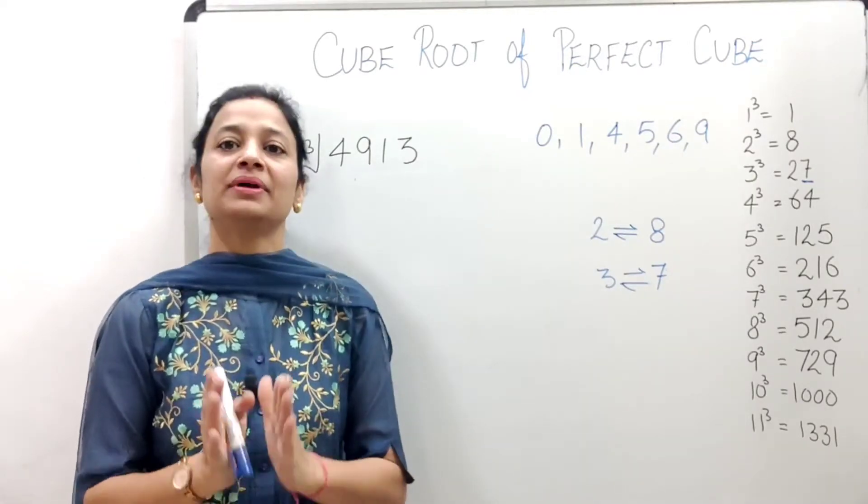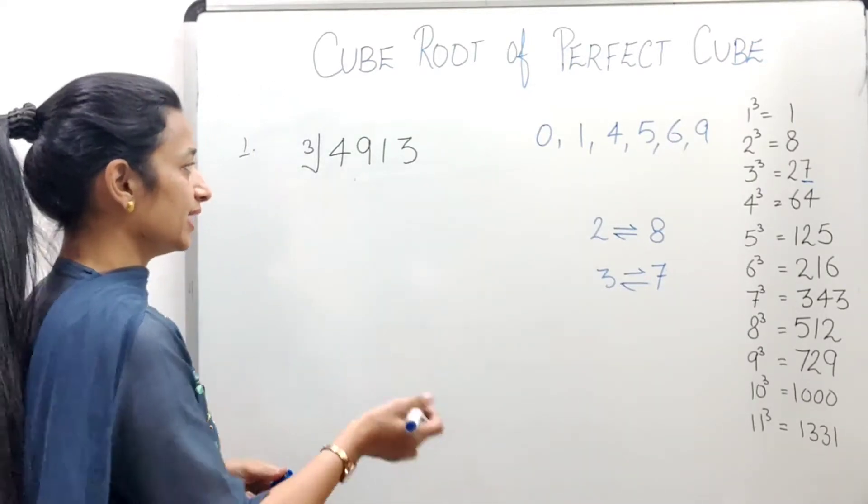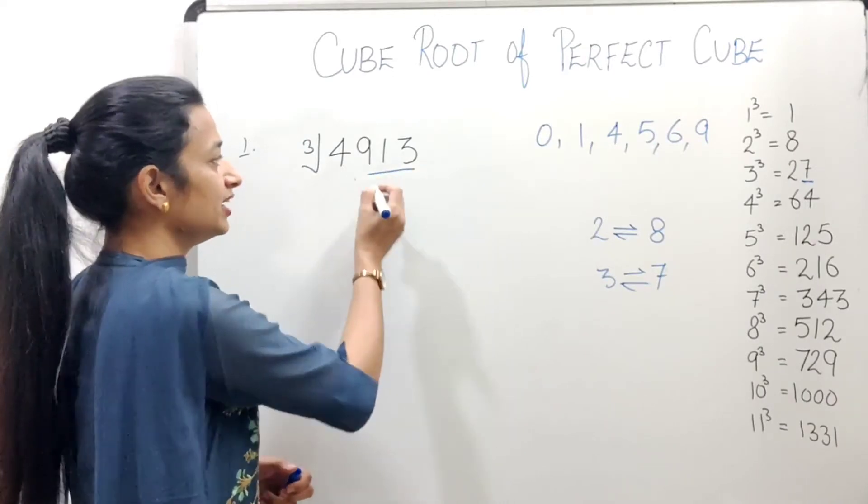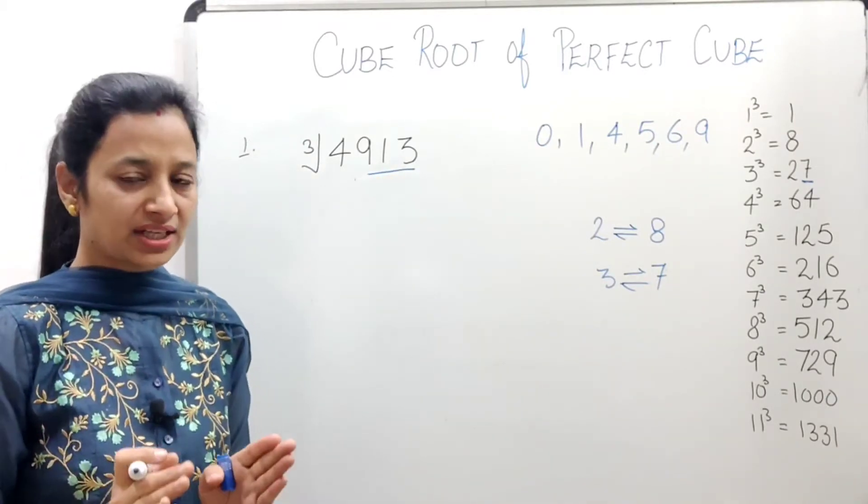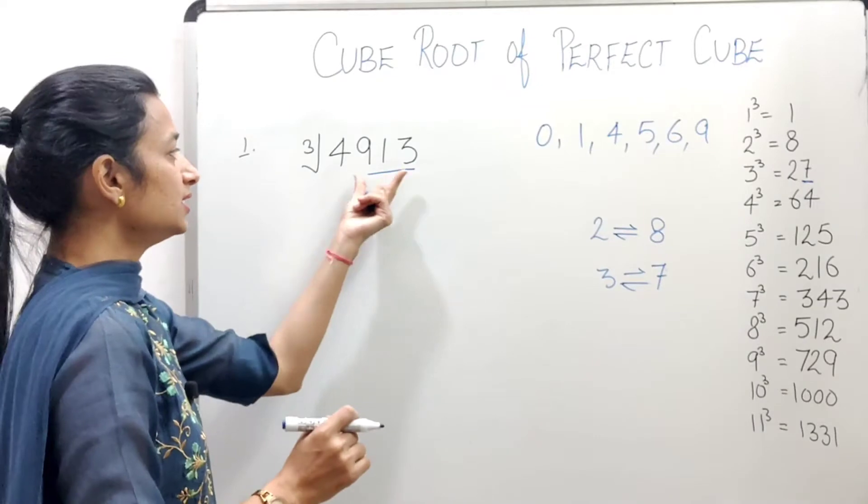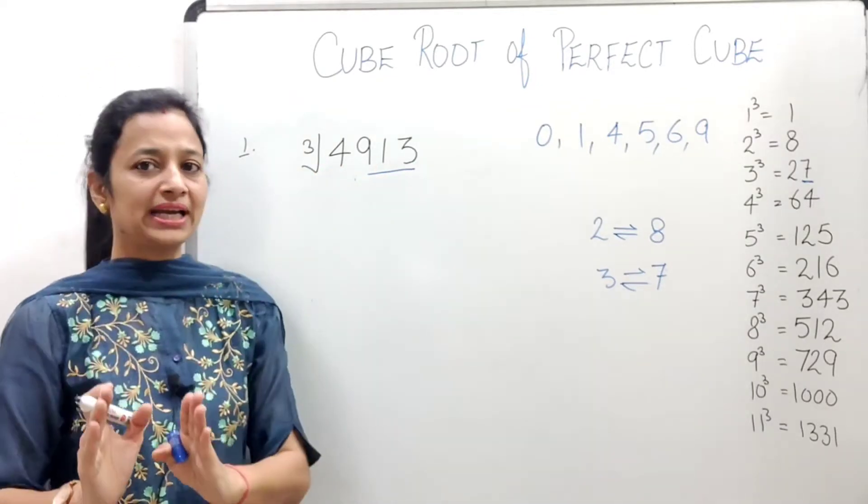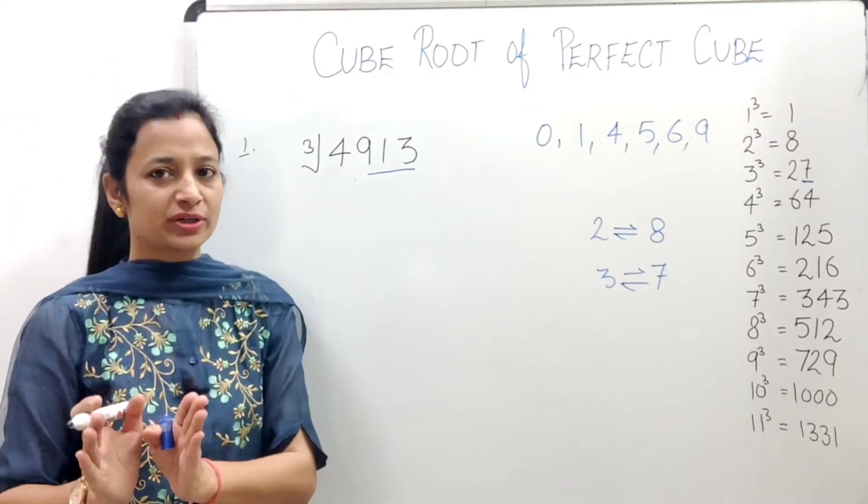The first example is: find cube root of 4913. So now, first step is, we have to do grouping. How to do grouping? From the right side, 3 numbers in one group. After that, whatever numbers remain, they go in another group.